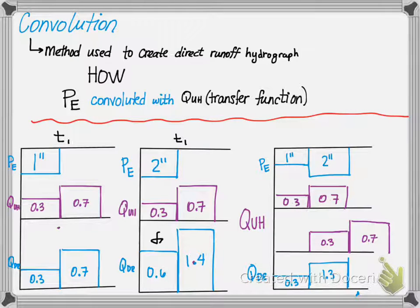And finally, the last time step would take the one inch and multiply it by whatever would be here, which is nothing, plus the two and multiply it by the 0.7, and this gives us 1.4. This is our direct runoff hydrograph based on the given excess precipitation and the provided unit hydrograph.